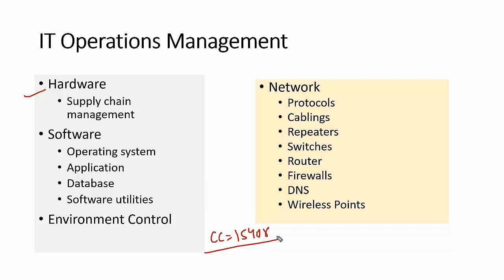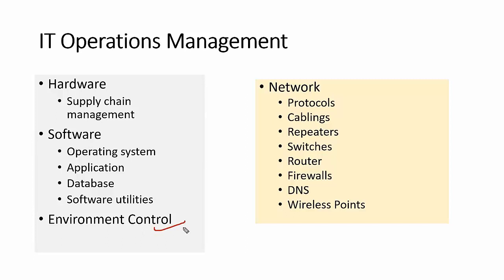As a risk practitioner you need to understand at a high level how things work: cabling, repeaters, switches, routers, firewalls, DNS, and wireless access points, and what risks are associated with each area. You need to understand risk coming from the operating system, applications, databases, software, utilities. Environmental controls are another example — HVAC systems, fire extinguishers — and the risks include protection against natural disasters. Make sure appropriate controls are in place to reduce the impact.